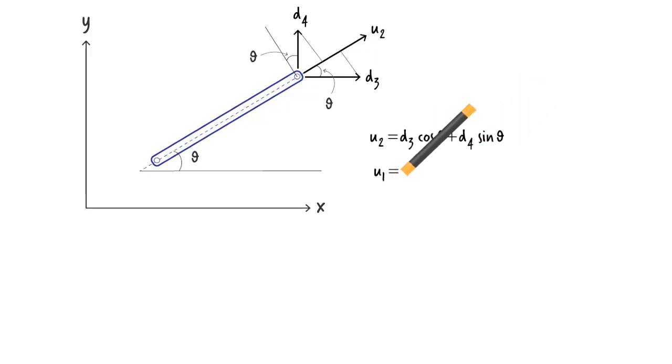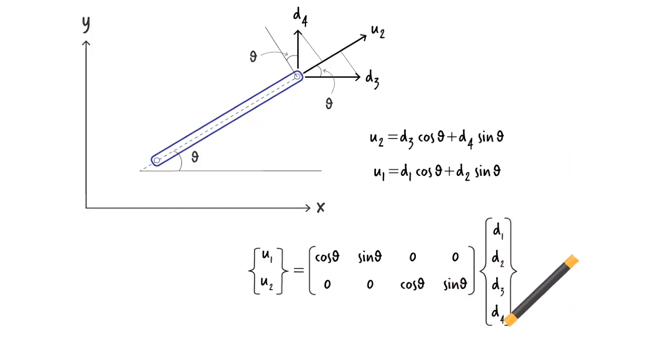Similarly, for U1 we can say. Expressing these two equations in matrix form, we get. We label this matrix T and call it the displacement transformation matrix.